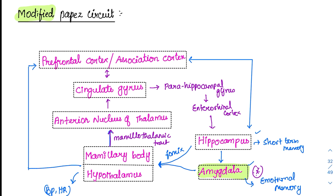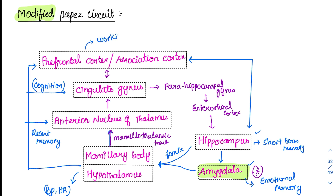The cingulate gyrus is also involved in cognition functions — like understanding emotional memories and behavior memories. The anterior nucleus of the thalamus is also involved in recent memory. The prefrontal cortex is involved in working memory.